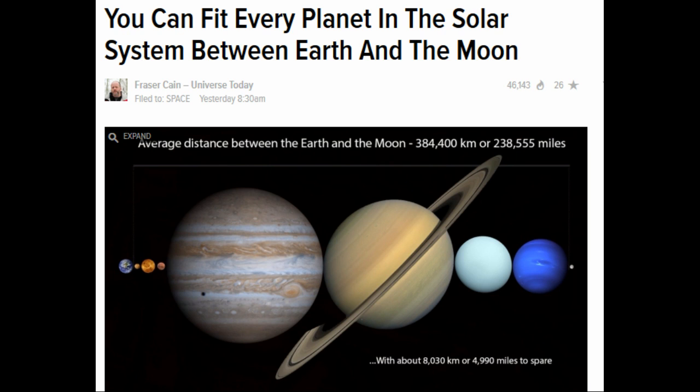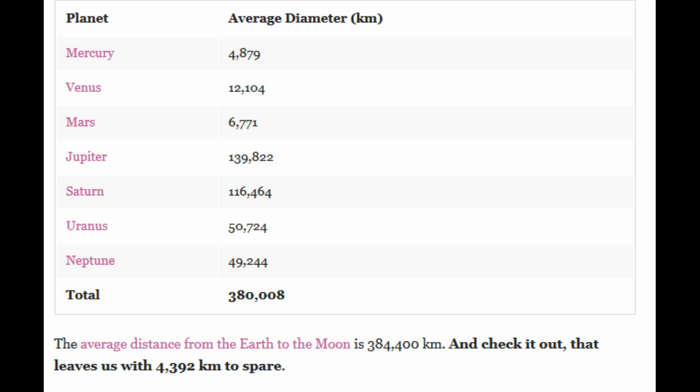It's pretty funky when you think about it. So here's the average diameter. This is all in kilometers. Earth is not on there, but it's basically the same as Venus, so about 12,000 kilometers.